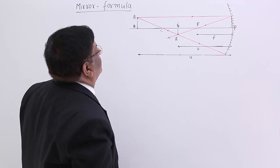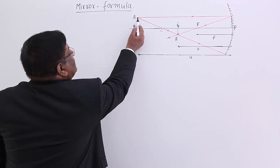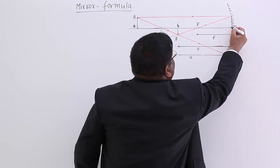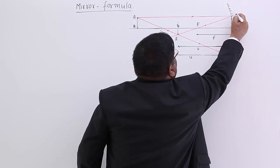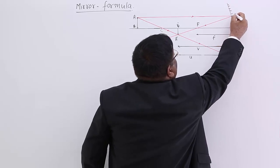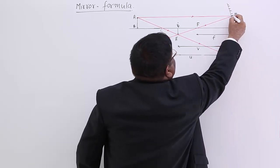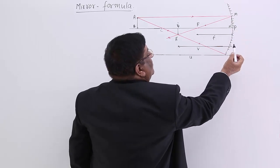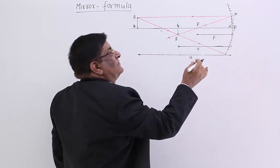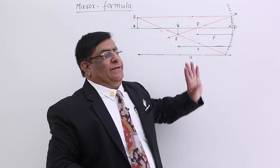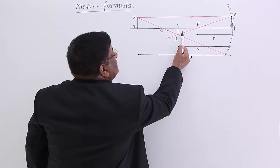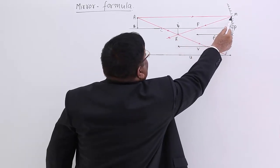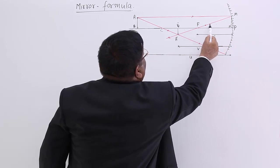Here we take geometry first. This is AB. These two lines are parallel. This is the normal — we draw a normal MN from here. This MN normal will be equal to AB, because this curvature is very small; we can assume that P and N are not much distance apart — they are almost at the same point. Now here is a triangle A'B'F, and triangle FMN. These two are similar triangles.